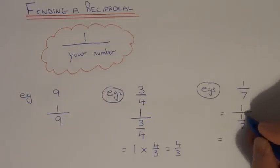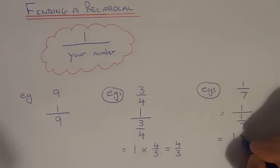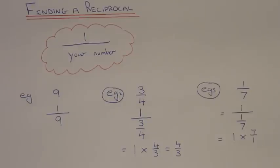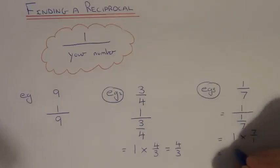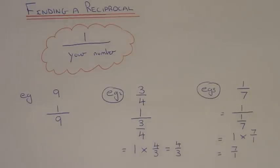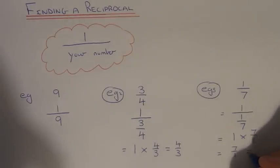So again we're dividing by a fraction. So all we need to do is flip the fraction upside down and change the divide to a times. So we get 1 times 7 over 1. So this gives us 7 over 1, and this is the same as 7.